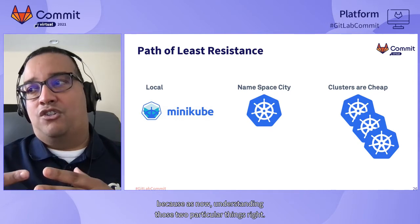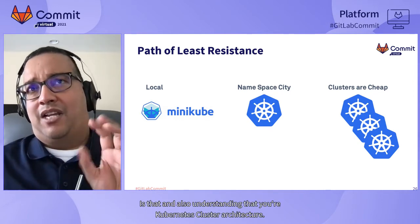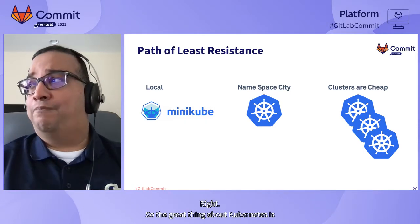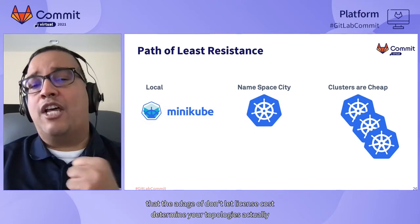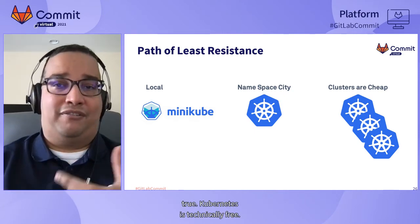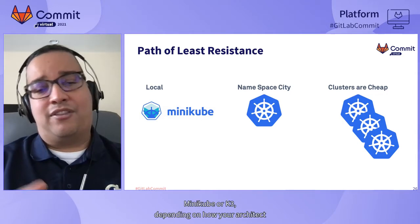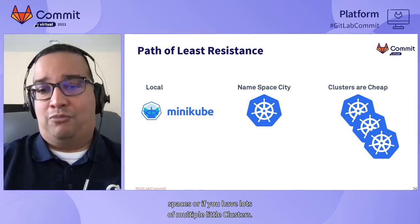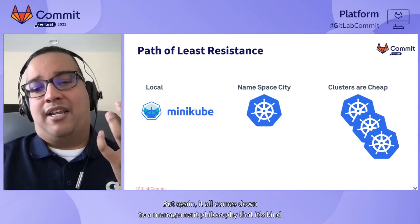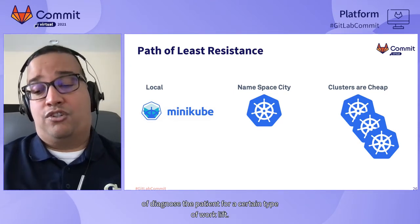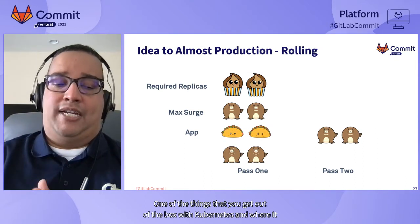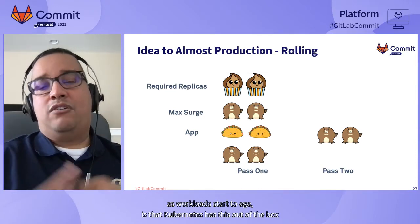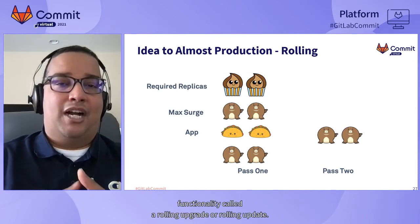Tools like Helm — a package manager — and Kustomize — a configuration manager — let you all speak the same language. Kubernetes is technically free and open source, so there's no license clause determining your topology. You can use a single large cluster with namespaces to separate groups, or many smaller clusters. Clusters are cheap. It all comes down to a management philosophy diagnosed for the type of workload.